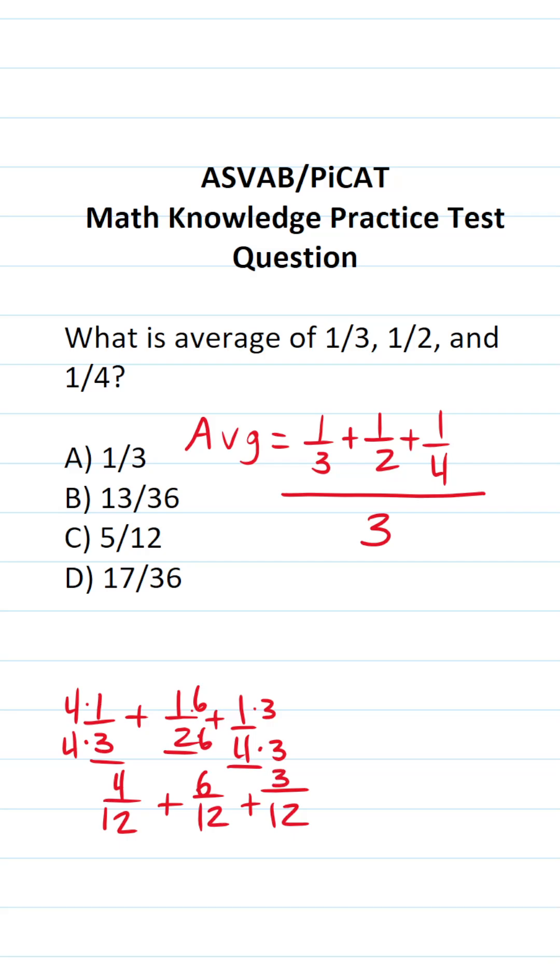Now that these all have the same denominator we're going to keep our denominator the same and then we're going to add our numerators. So this is going to be four plus six plus three. You should be able to do that part mentally. Four and six is ten plus three is going to be thirteen. So this is thirteen over twelve.